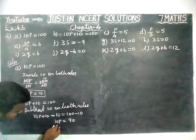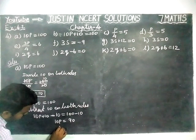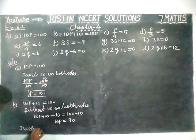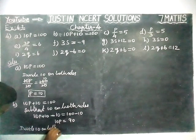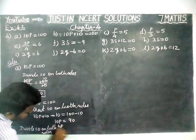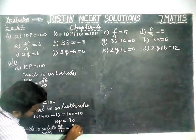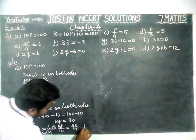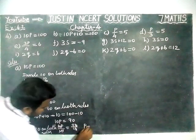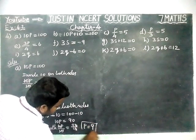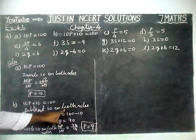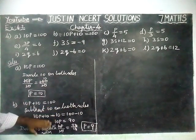Now, we have to divide 10 on both sides. 10P divided by 10 is equal to 90 divided by 10. 10 gets cancelled, 0 gets cancelled. P is equal to 9. Hereafter, we will not write subtract 10 on both sides — we will do those sums directly.